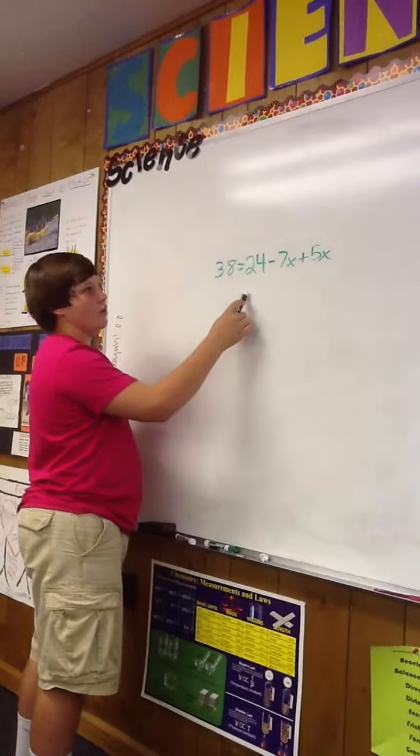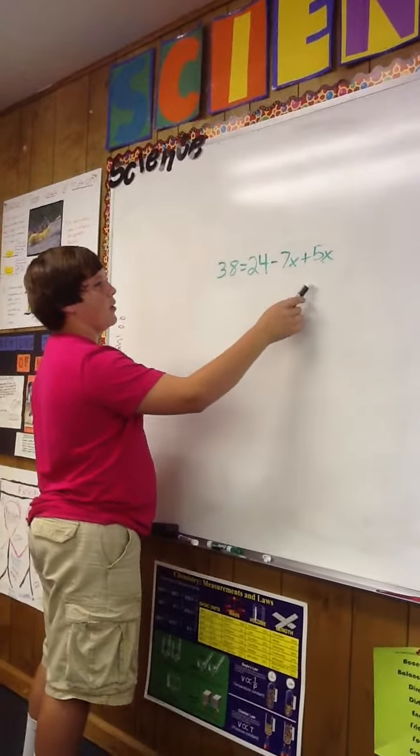Okay, my problem is 38 equals 24 minus 7x plus 5x.